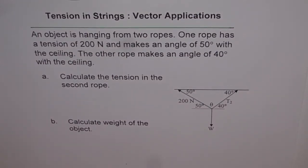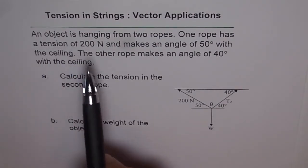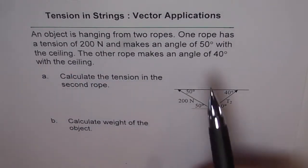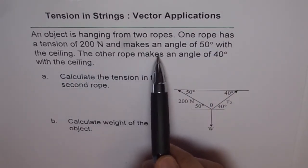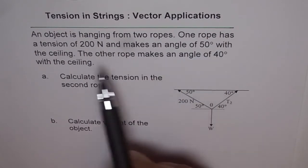Tension in strings vector applications. An object is hanging from two ropes. One rope has a tension of 200 newtons and makes an angle of 50 degrees with the ceiling.